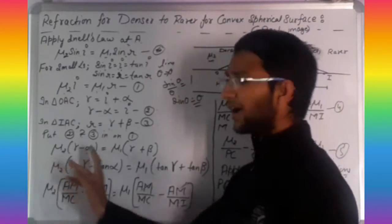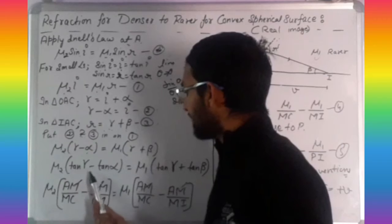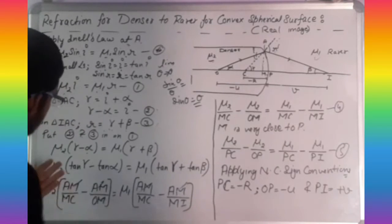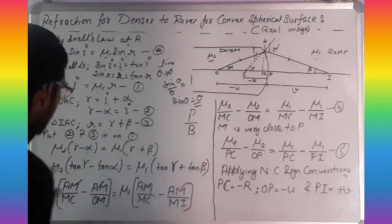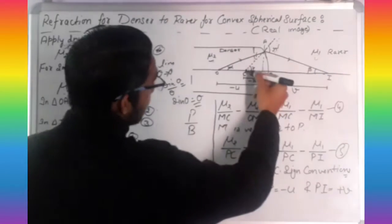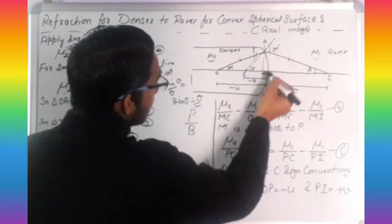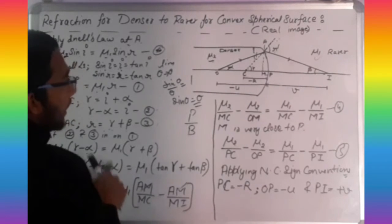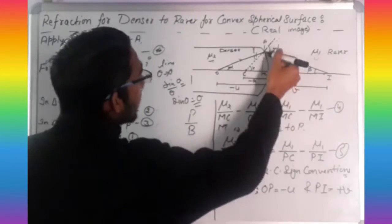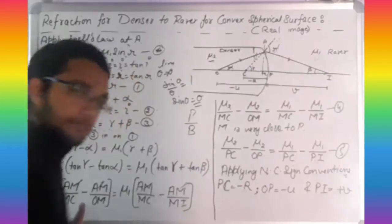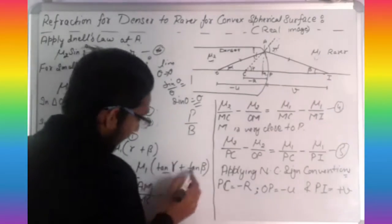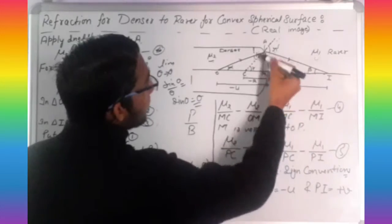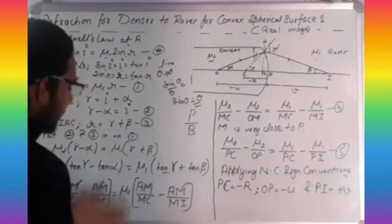In the next step, replace the angles with their tangent values. So mu2 times (tan gamma minus tan alpha) equals mu1 times (tan gamma plus tan beta). For triangle CAM, tan gamma equals AM over CM. For triangle OAM, tan alpha equals AM over OM. For triangle IAM, tan beta equals AM over MI.